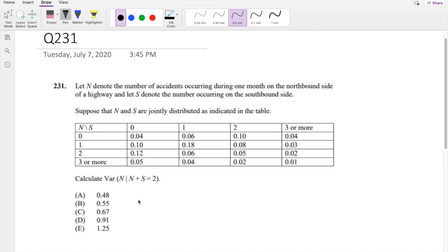Okay, as we're going to attempt it, let's just dive right in. So basically, we're looking for the variance of n given n plus s equals 2. As always, the variance formula goes like this: it's expectation of n squared, the second moment, minus the expectation of n, the whole thing squared.